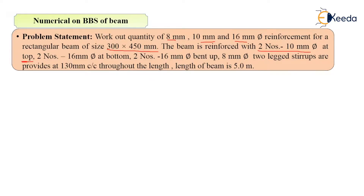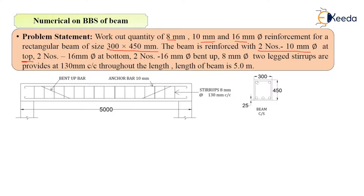Two numbers of 16 mm diameter bars are at the bottom and two numbers of 16 mm diameter bars are bent up — so out of four bars, two bars are straight and two bars are bent up at the bottom. 8 mm two-legged stirrups are provided at 130 mm center to center throughout the length of the beam, and the length of the beam is given as 5 meters.